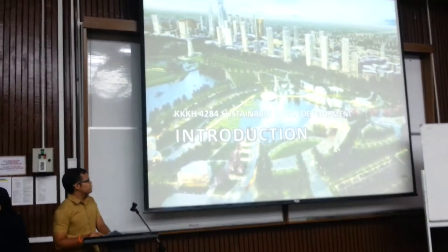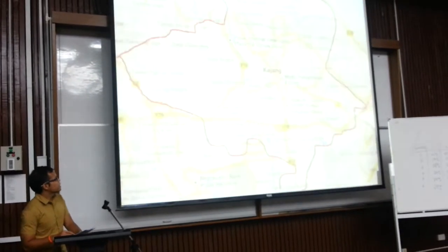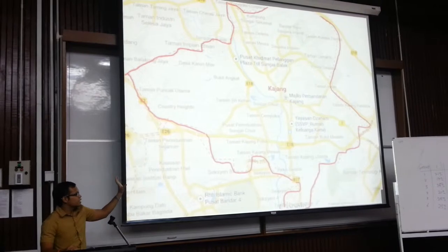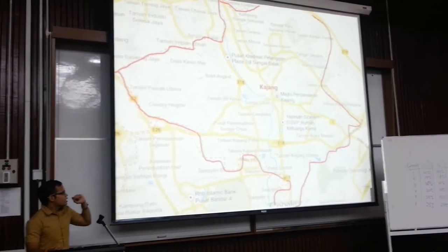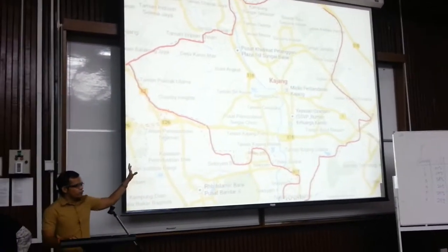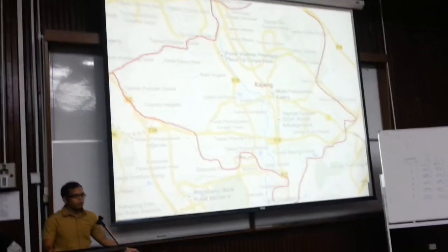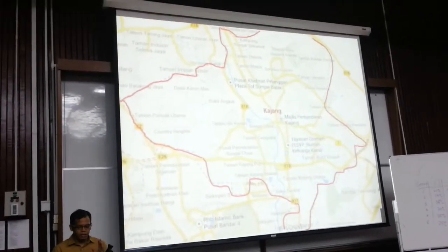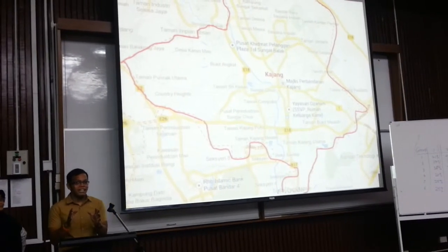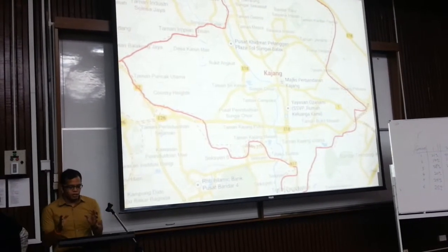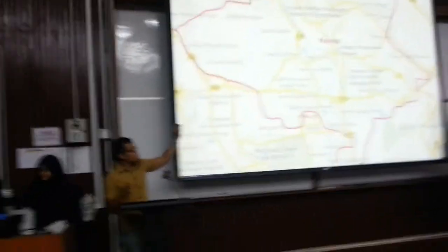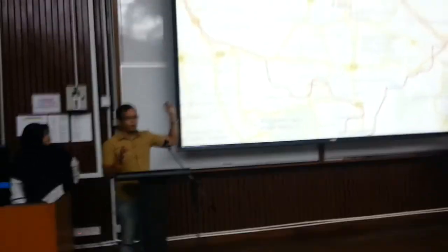First, we go to the introduction. As you all know, this is the area coverage for Kajang City. It is the most eastern part of the Selangor town and located 21 kilometres from KL. The population estimated is more than 300,000 people, and the centre of the town is very densely populated.